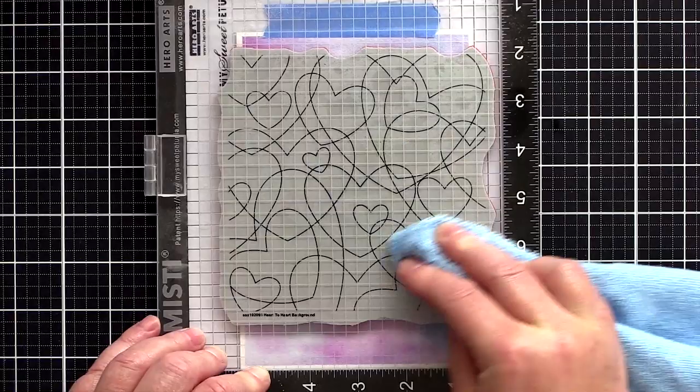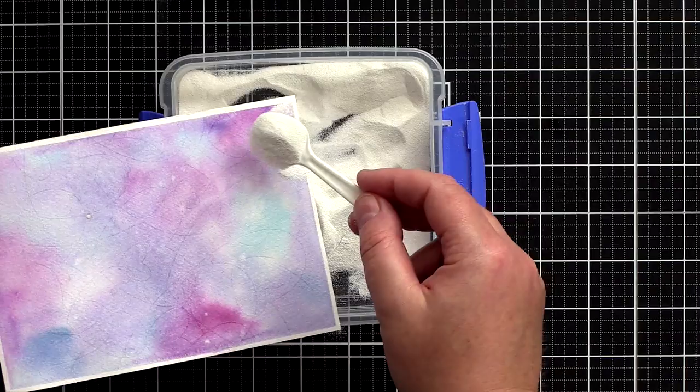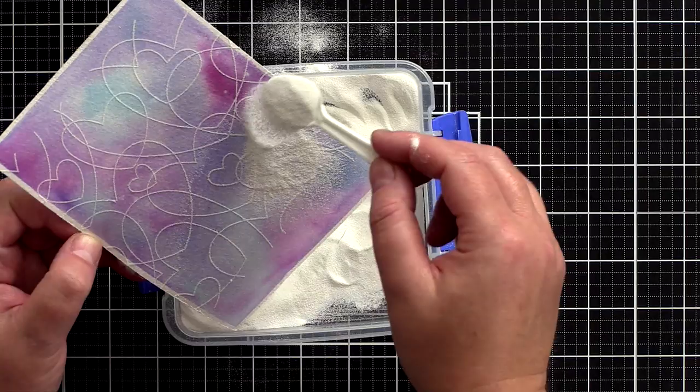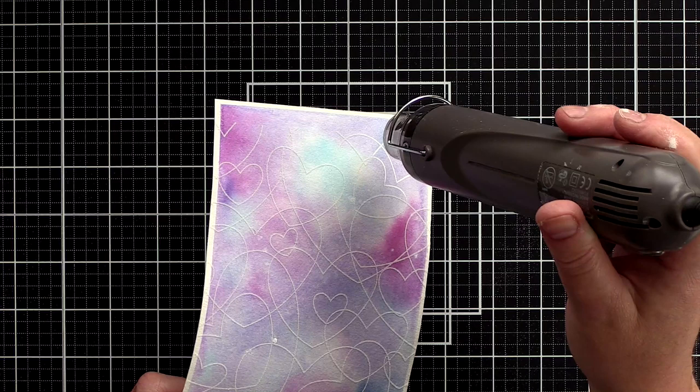This way the resulting embossed lines will be as delicate as they are intended to be rather than heavy and squished out by too much pressure. I sprinkled the card with white embossing powder from Simon Says Stamp making sure to cover the whole area and then gave it a good tap off before using a hot heat tool to melt the embossing powder.